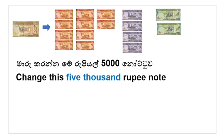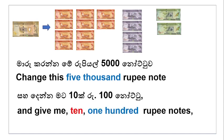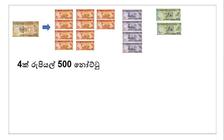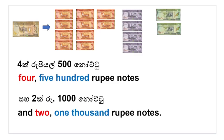Maaru karanname rupee al panahai noot, saha denna maat — dahayak siye noot — and give me ten one hundred rupee notes. Hatara — rupee al panahai noot — four five hundred rupee notes. Saha deka — rupee al dahaya noot — and two one thousand rupee notes.